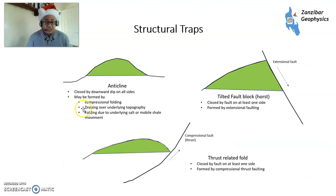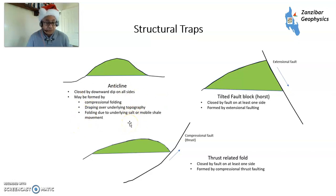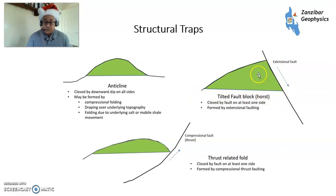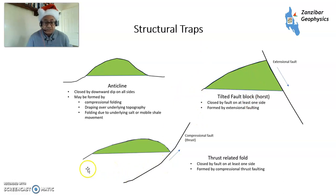Structural traps include an anticline, which has downward dip on all sides — basically like a rock dome. It can be formed by compressional folding, draping over an unconformity, or by folding over something like a salt diapir or mobile shale. There's also a tilted fault block, where an extensional fault causes one side to slide down while the other stays up, creating a trap closed on one side by a fault and on other sides by structural dip. Or it could be a thrust-related fault in a compressional setting — a bit like a rolled-up rug.